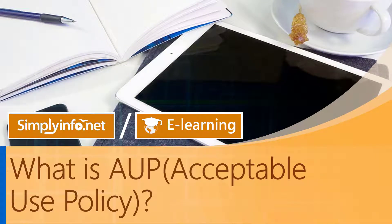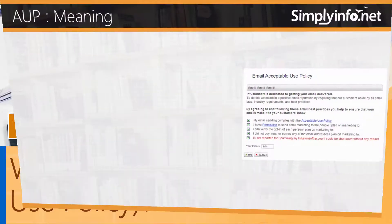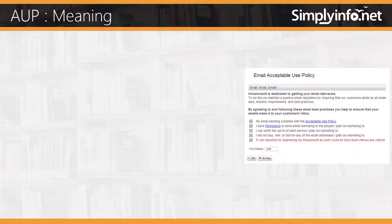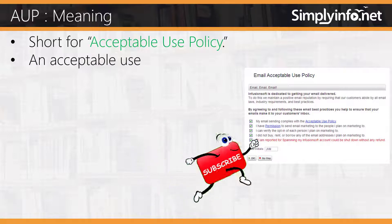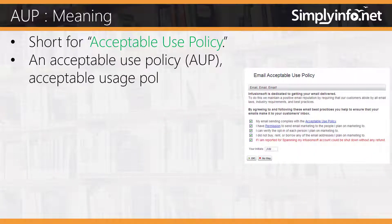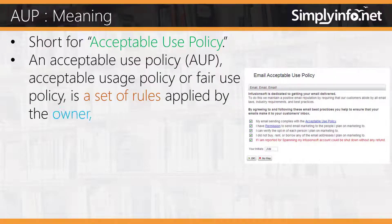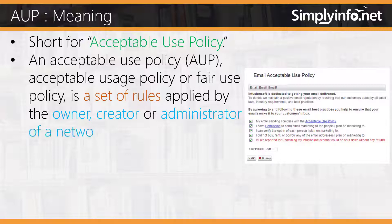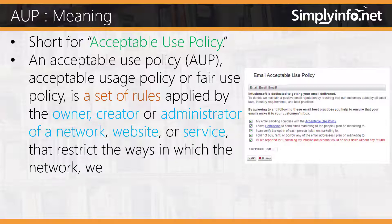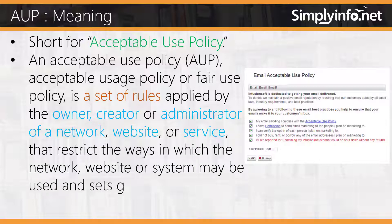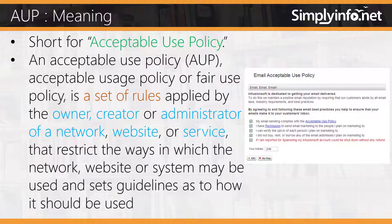What is AUP — acceptable use policy? AUP, meaning short for acceptable use policy. An acceptable use policy, or fair use policy, is a set of rules applied by the owner, creator, or administrator of a network, website, or service that restricts the ways in which the network, website, or system may be used and sets guidelines as to how it should be used.